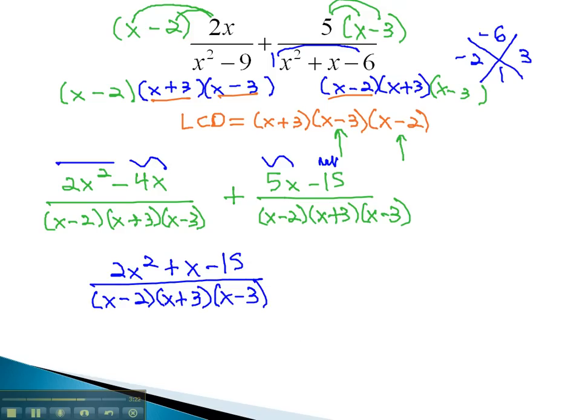However, before we say this is our final solution, we will want to factor to see if it can reduce. Using the AC method in the numerator, we're multiplying to negative 30 and adding to 1. This is done with 6 and negative 5.